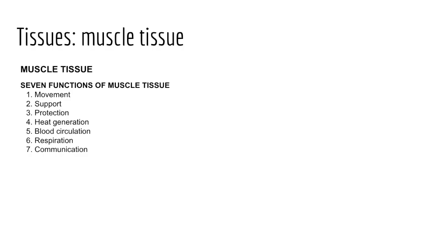Fifth, muscle tissue aids in blood circulation — cardiac muscle contracts to pump blood, and smooth muscle aids movement of blood through vessels, delivering oxygenated blood to tissues. Sixth, muscles allow us to breathe, relying on the diaphragm and accessory muscles for inhalation and exhalation, and smooth muscles of the respiratory tree to increase or constrict bronchial size. Seventh, muscles allow us to communicate — talking, gesturing, and conveying emotions through smiling and frowning.